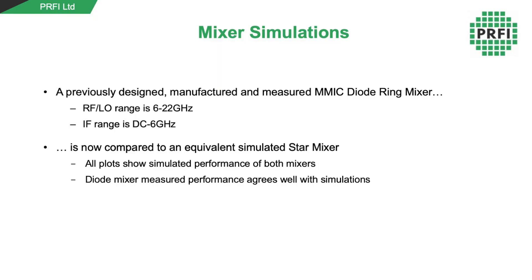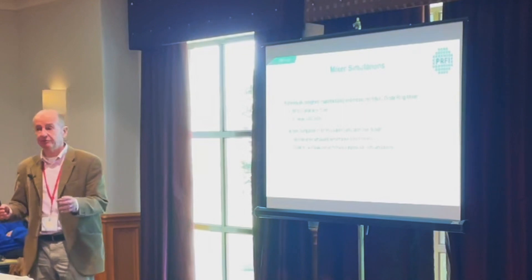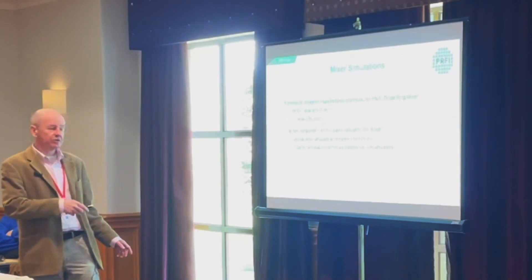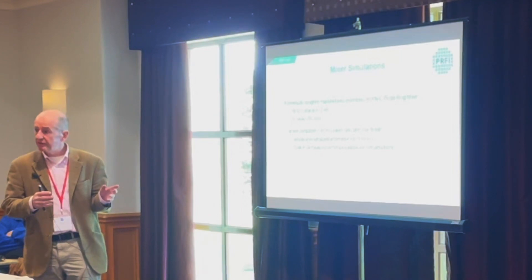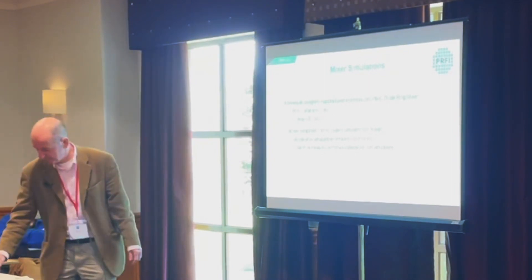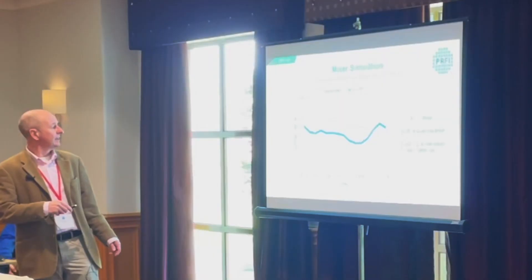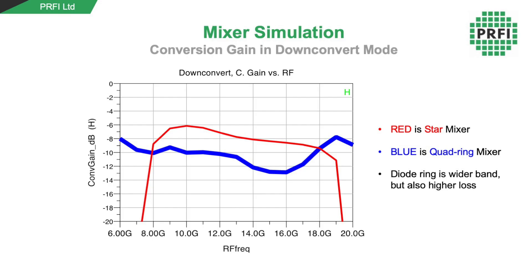Now for some simulations. We designed a mixer previously for 6 to 22 GHz, with an IF range of DC to 6 GHz — though it was a struggle to reach 6 GHz because we need the RF short to be good at RF and a good open at the IF. We're looking at how the simulated performance of this quad ring mixer compares to a star mixer realized on the same process. Looking at conversion loss: the quad ring is slightly higher in conversion loss — when measured we actually got slightly lower than simulated. The star has slightly lower conversion loss, but you do lose a bit of RF bandwidth; the quad ring gives you wider bandwidth.